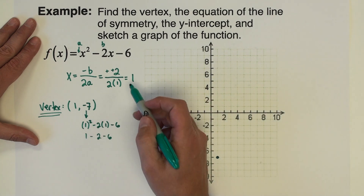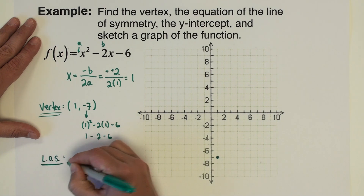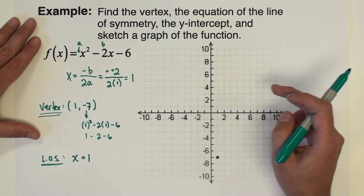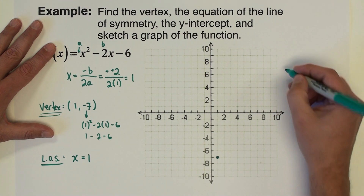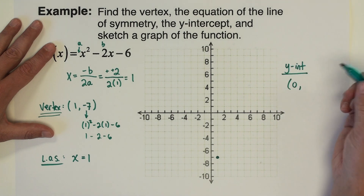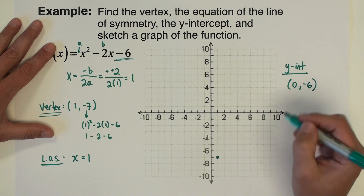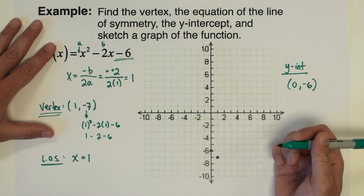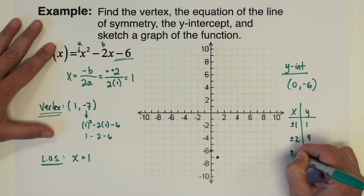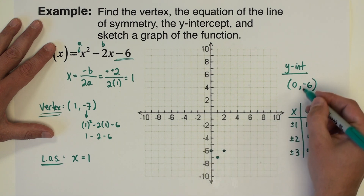Because we've already found x equals 1, we already have the line of symmetry: x equals 1. Then we find the y-intercept. The y-intercept is the point (0, c), and looking at the constant term in our function, that's negative 6. So the y-intercept is (0, negative 6), and that point is on the graph. One of those points — going one unit left from the vertex — was actually the y-intercept.